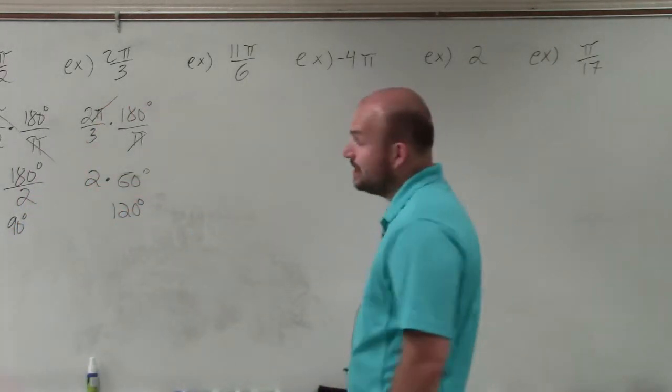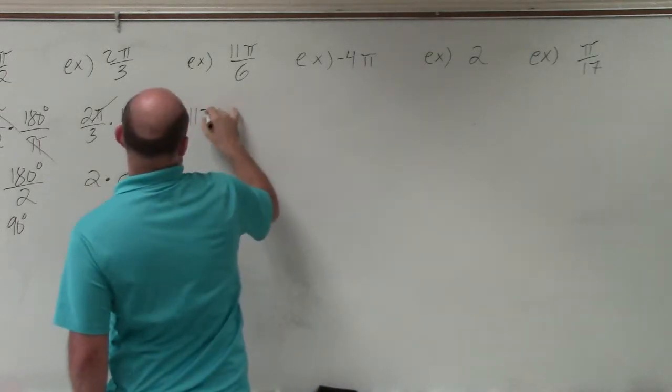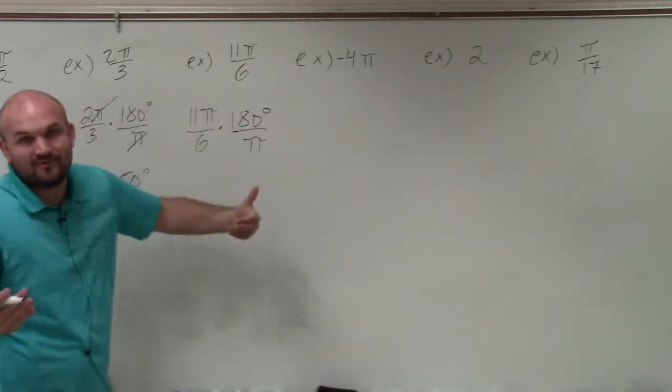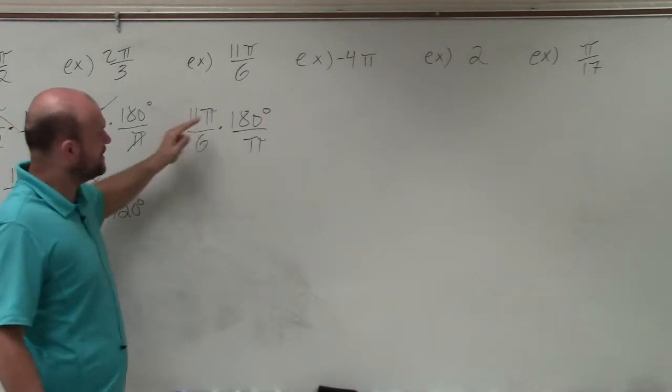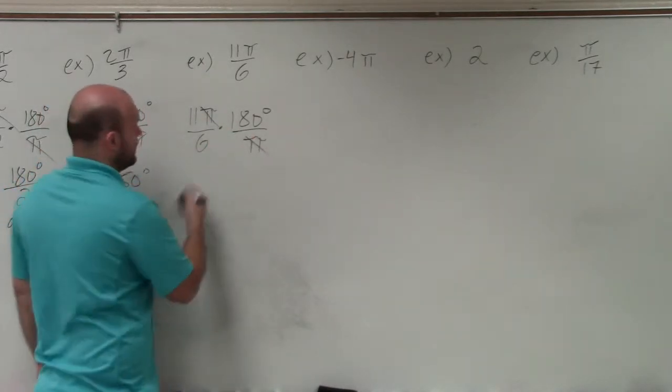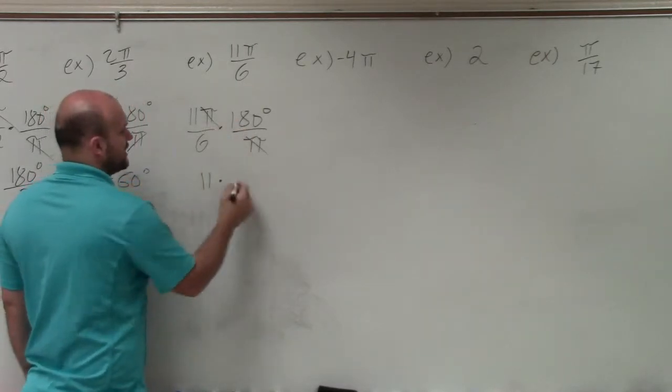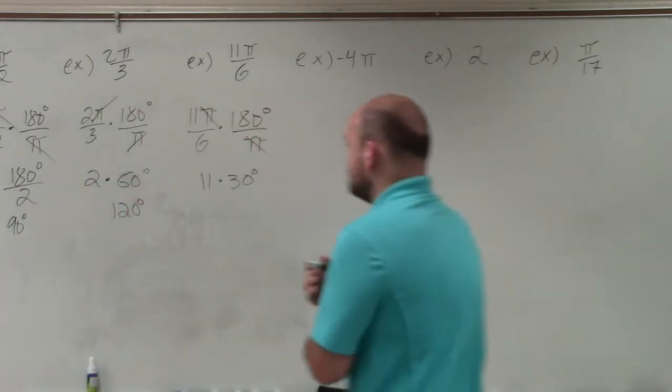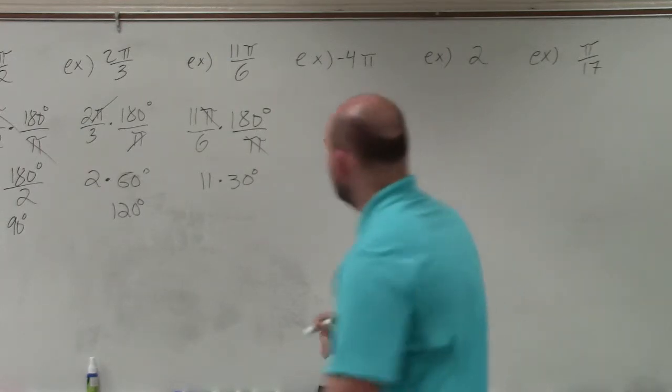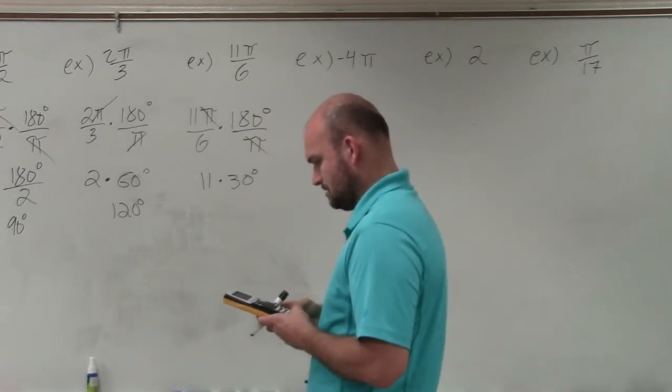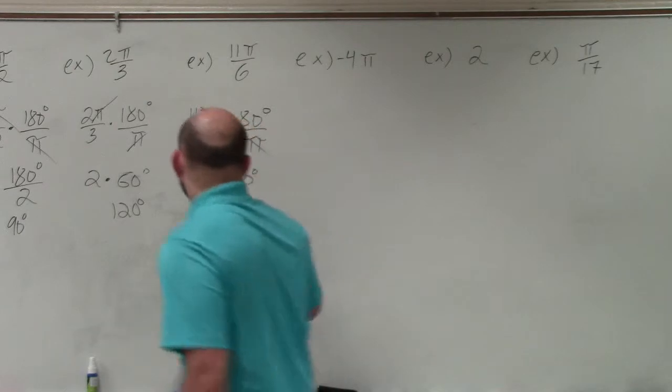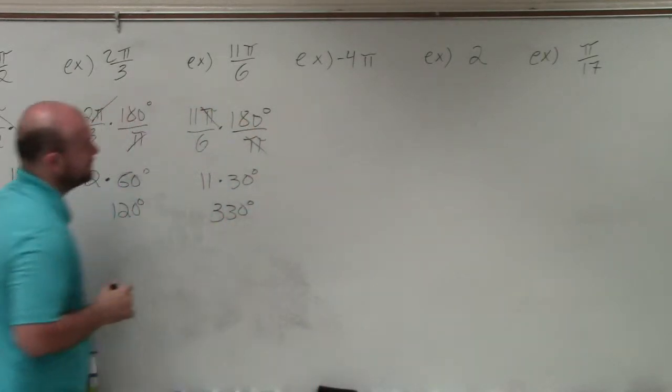The next one here is I have 11π divided by 6. So therefore, I'll do 11π divided by 6 times 180 divided by π. It's much easier to simplify before you actually multiply. So I don't want to multiply 11 times 180. Let's divide the 6 into the 180 first, which will give us 30. So therefore, the π's, those divide to 1. And I'm left with 11 times 6 goes into 180, 30 times. So therefore, I'll have 30 times 11 times 30 degrees. So therefore, it's going to be 330 degrees.